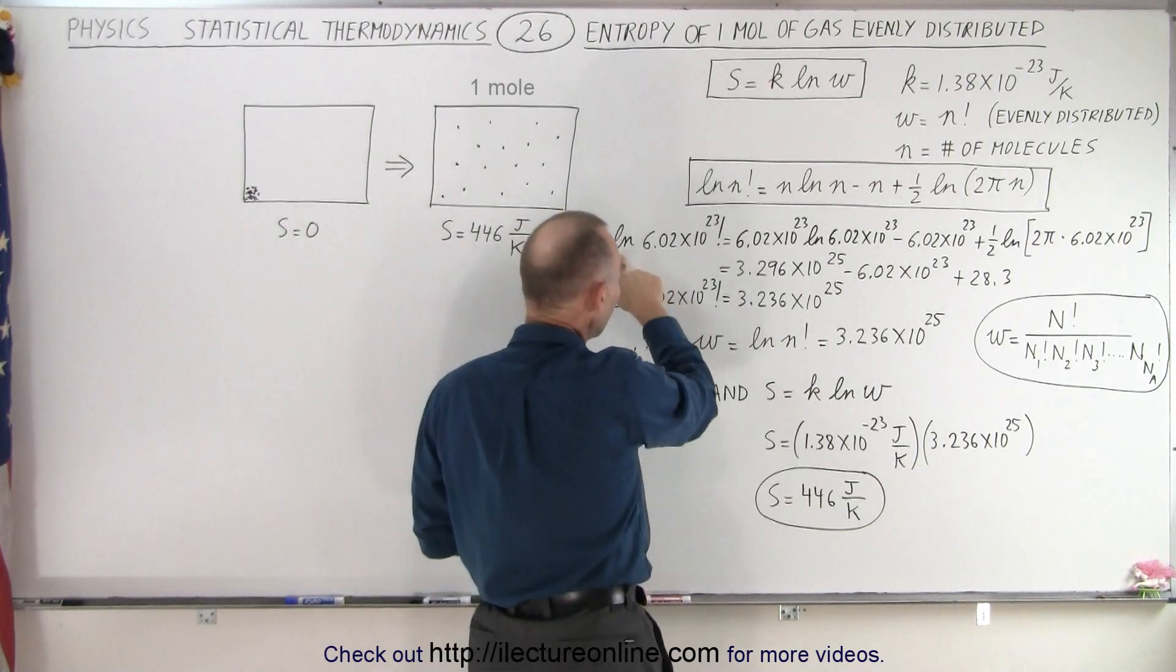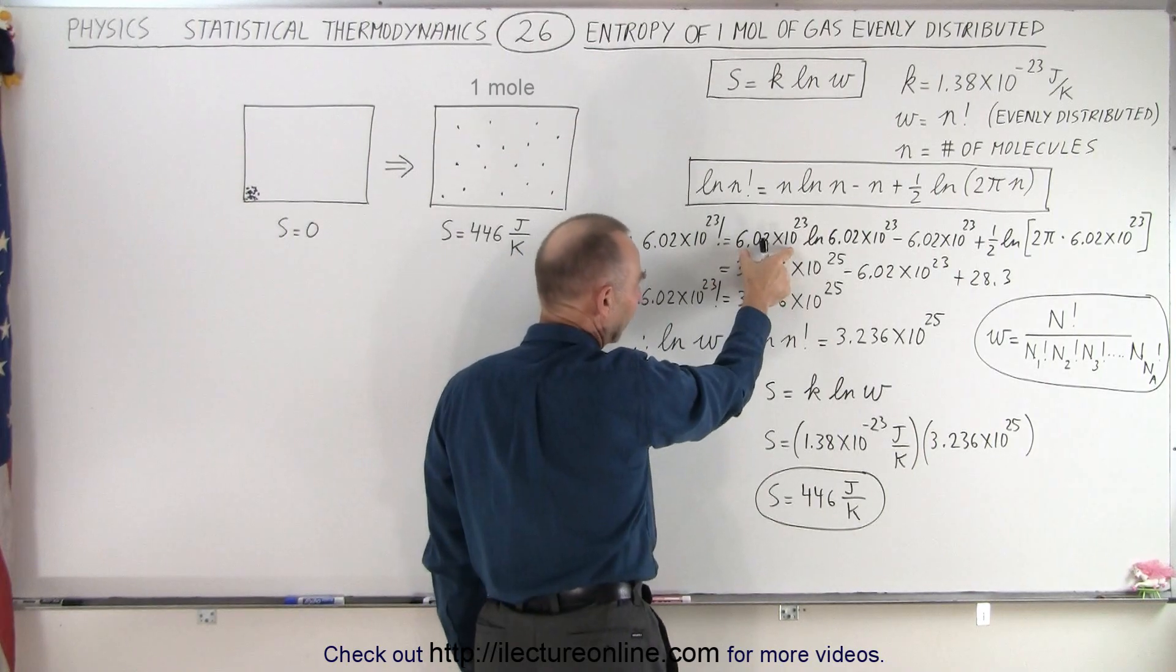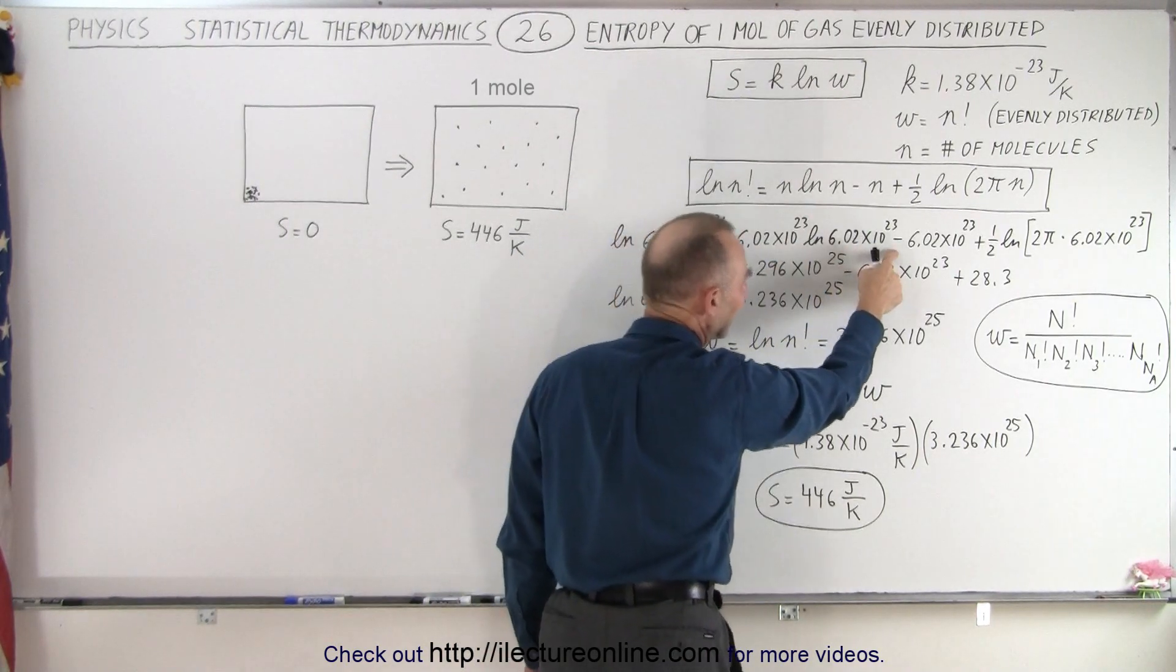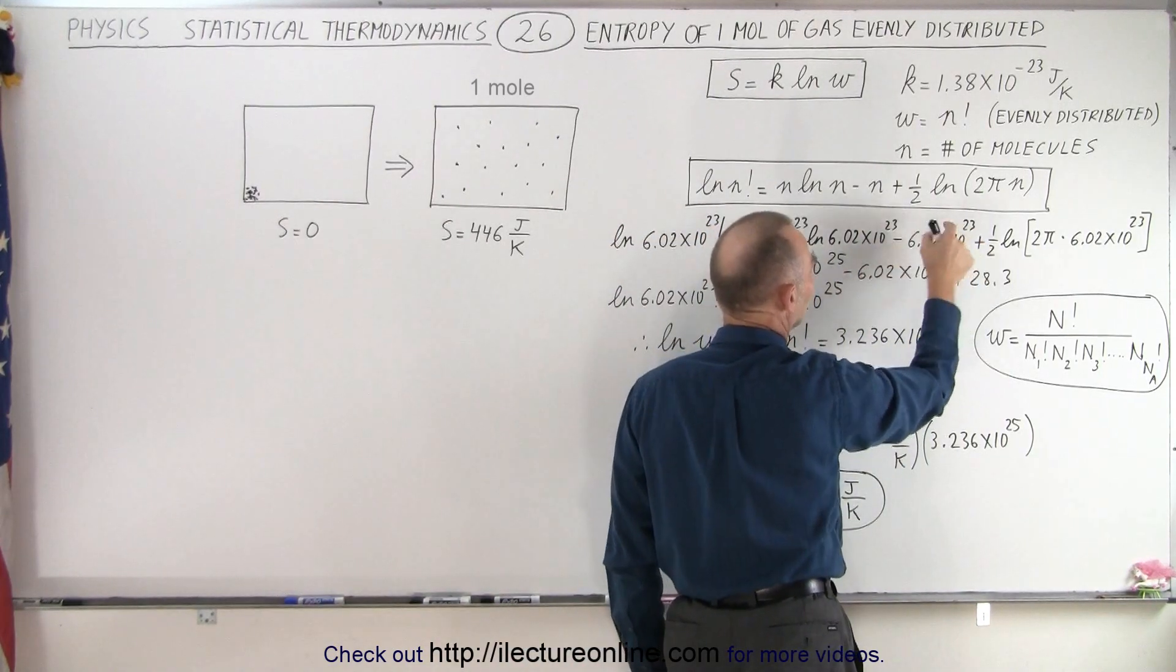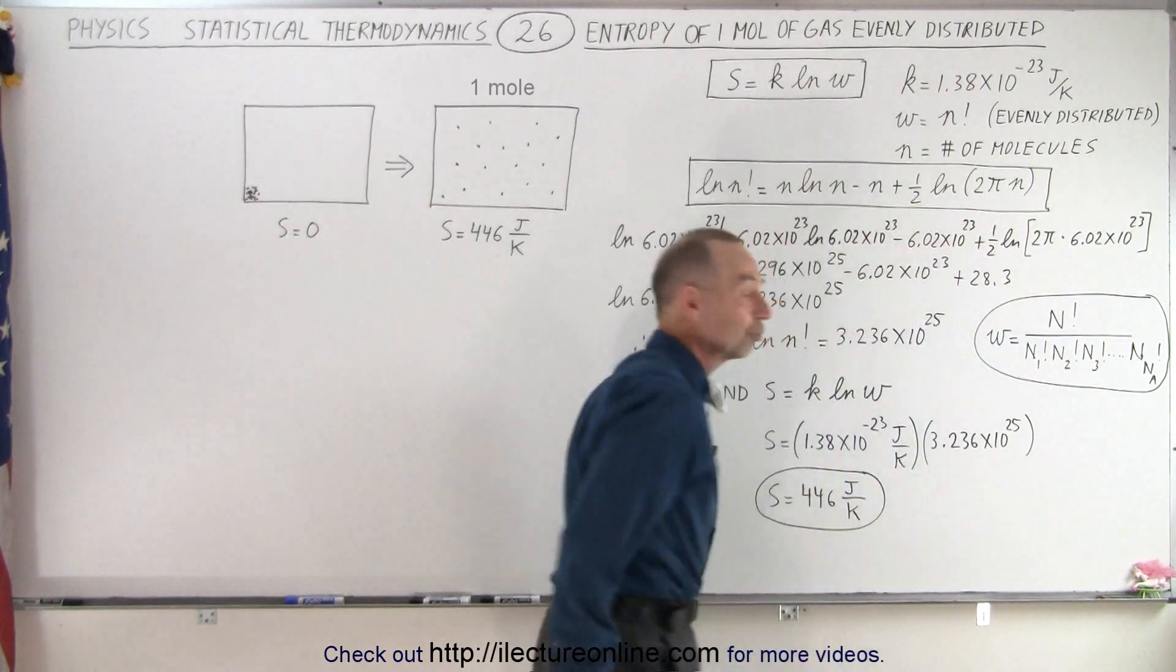So the natural log of one mole of molecules factorial is equal to Avogadro's number times the natural log of that number minus, then of course we have 6.02 times 10 to the 23, which is n right here, plus 1.5 times the natural log of 2π times Avogadro's number.